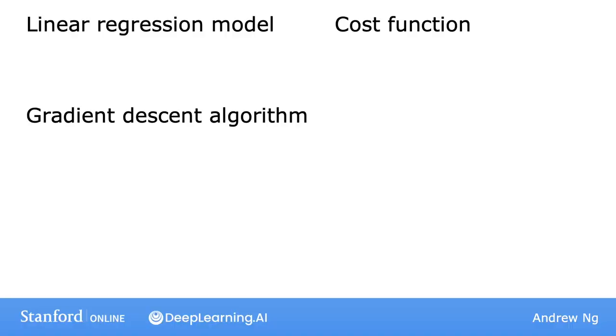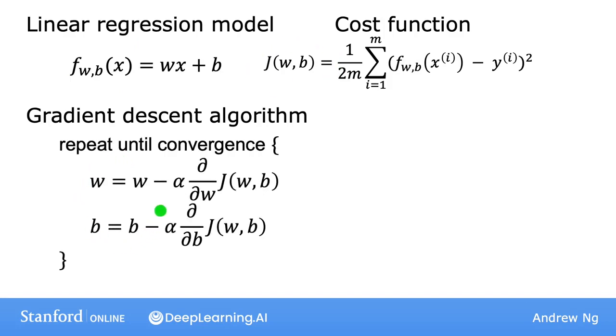Let's get to it. Here's the linear regression model and to the right is the squared error cost function and below is the gradient descent algorithm. It turns out if you calculate these derivatives, these are the terms you would get.